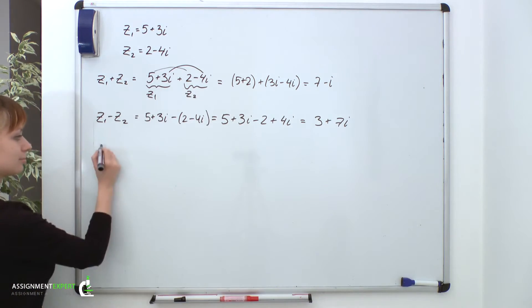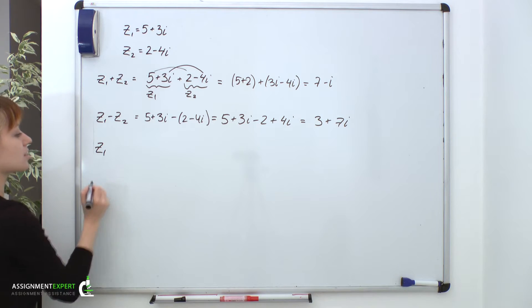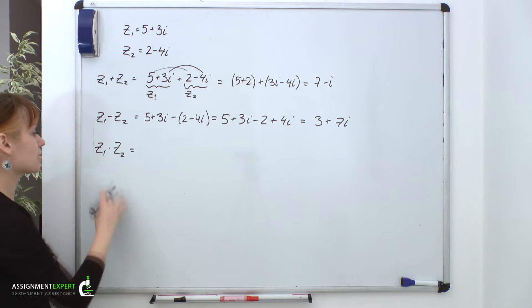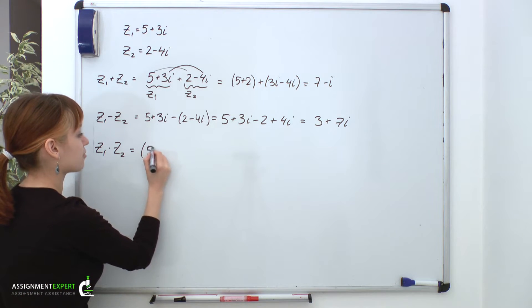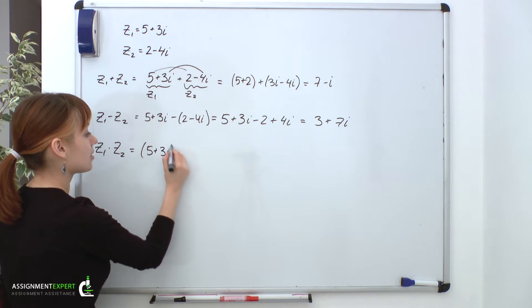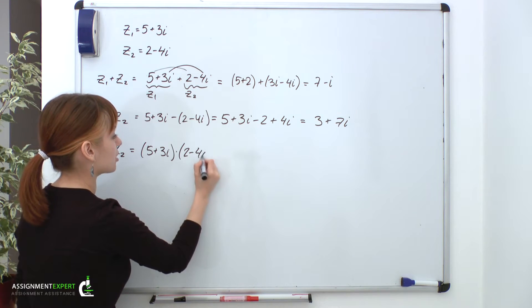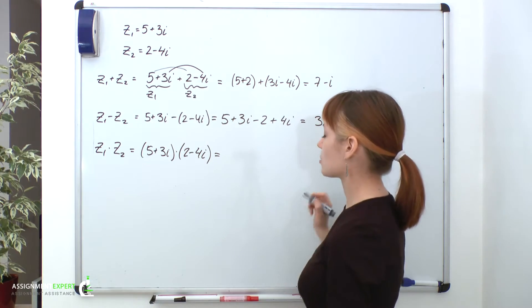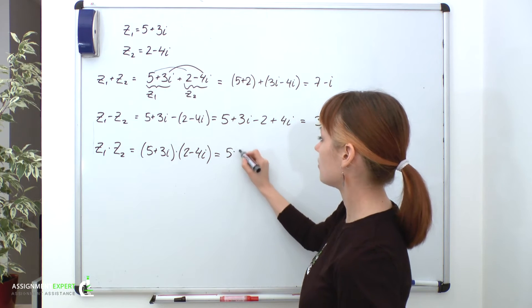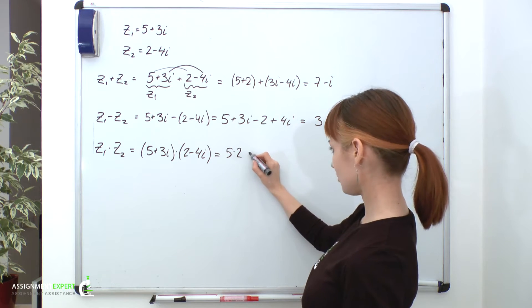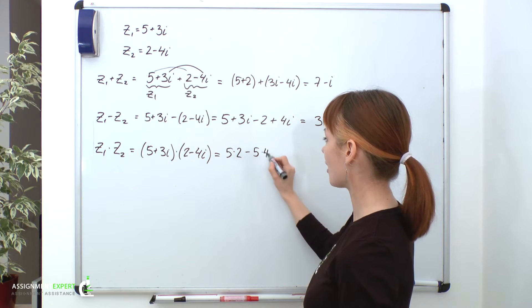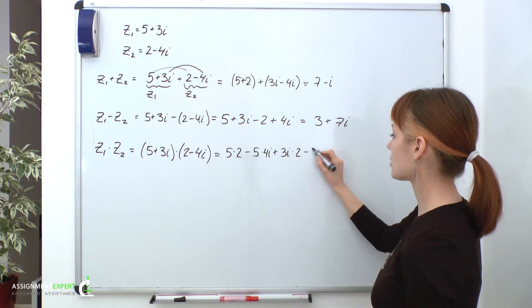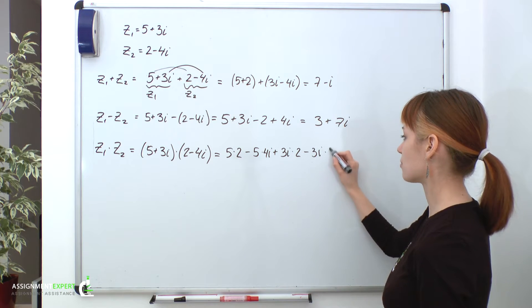Now, let's move on to multiplication. This time we'll want to multiply Z1 and Z2. But again, we'll treat them as dual-termed expressions. So, we'll have 5 plus 3i multiplied by 2 minus 4i. Expanding these brackets will obtain the following: 5 times 2 minus 5 times 4i plus 3i times 2 minus 3i times 4i.